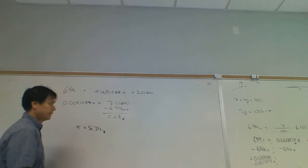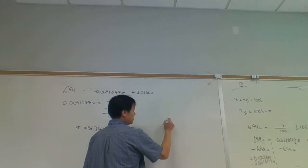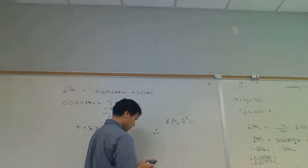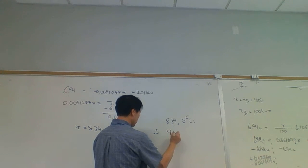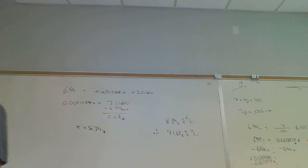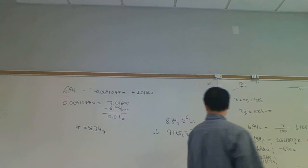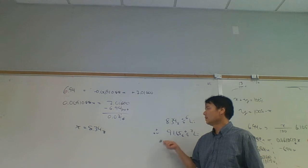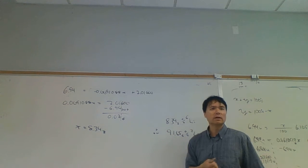So X is the percent lithium-6 — about 8.343% lithium-6 — and therefore about 91.657% lithium-7. The textbook got 91.7% lithium-7 and 8.3% lithium-6, which is consistent. They didn't track significant figures as carefully as we did, but that's fine. You can double-check by plugging these values back into the original equation to verify you get the same average atomic mass of 6.94 U.